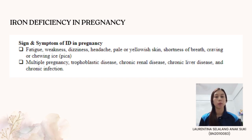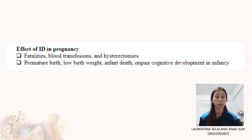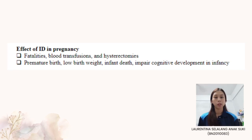Clinical conditions commonly associated with anemia in pregnancy include multiple pregnancy, trophoblastic disease, chronic renal disease, chronic liver disease, and chronic infection. A hemoglobin concentration below 11g/dL in the first trimester or below 10g/dL in the second and third trimester is considered significant anemia in pregnancy. Severe maternal morbidity, including fatalities, blood transfusion, and hysterectomy, was more common in women who had anemia.